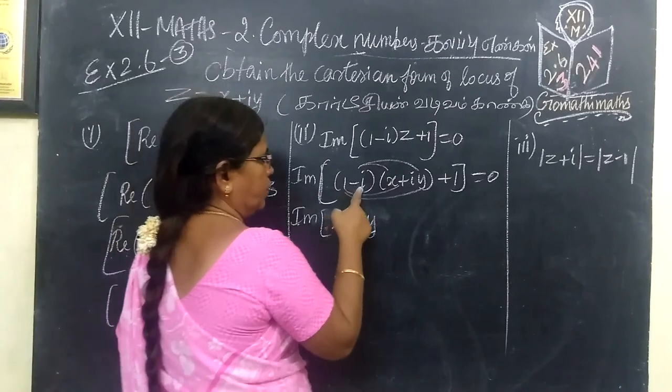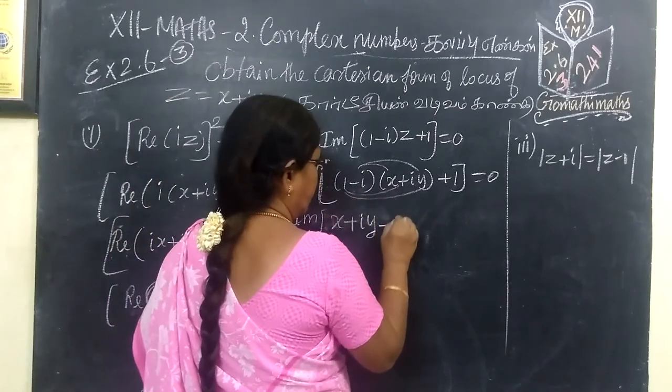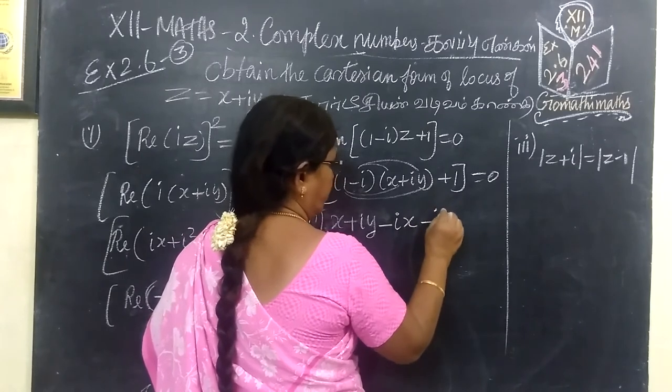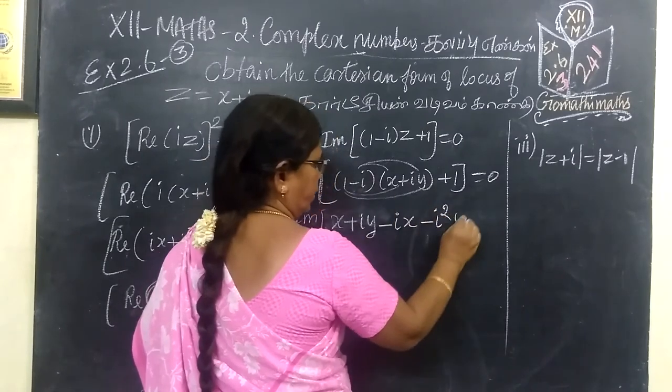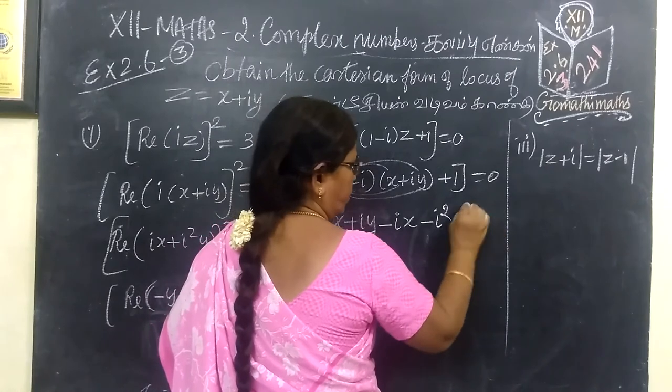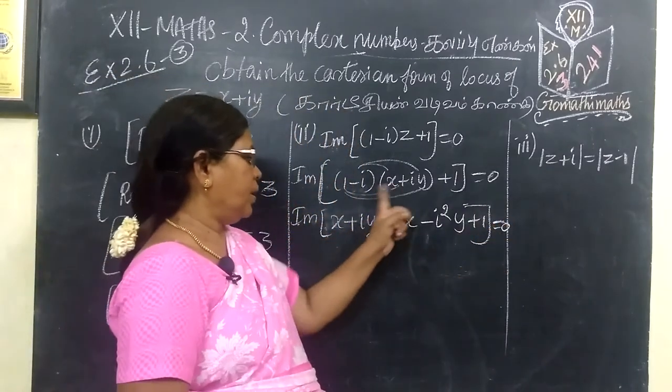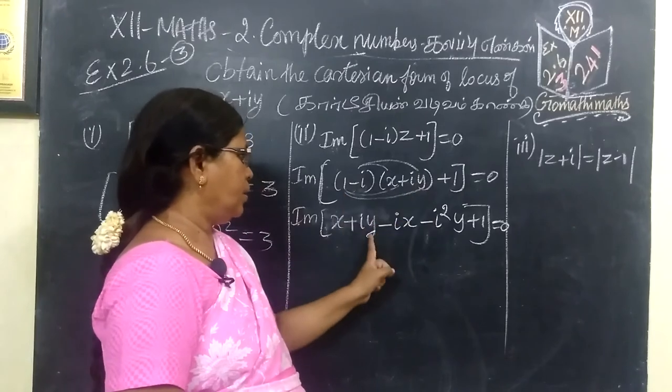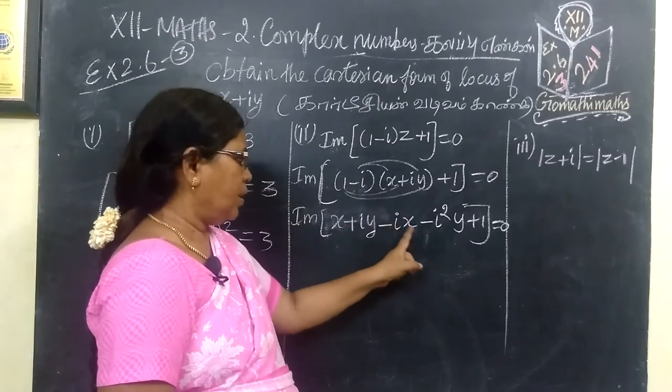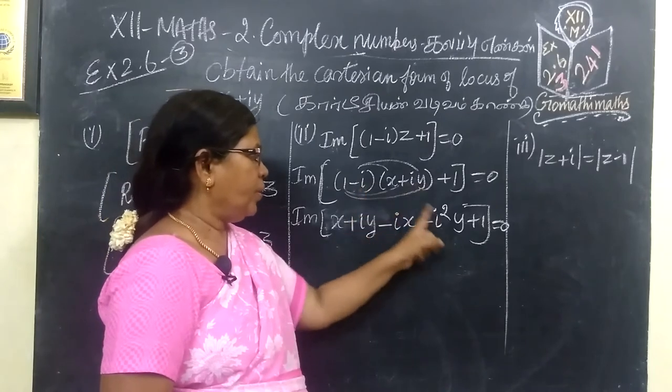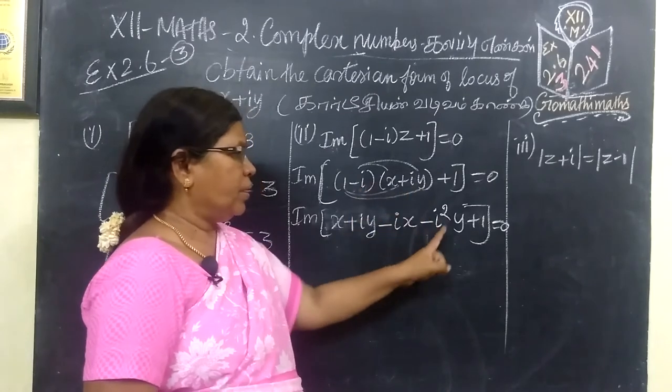Multiply first, minus i into this, minus ix, then i into i, i squared, here, there is a minus. This is y plus 1 equal to 0. 1 into x, 1x, 1 into this. i into x, ix, here, minus i. Then i into y, iy, here, i var, minus i squared y.